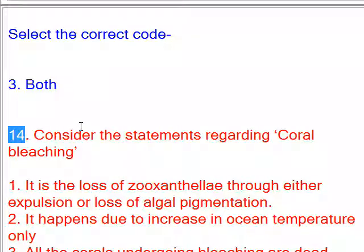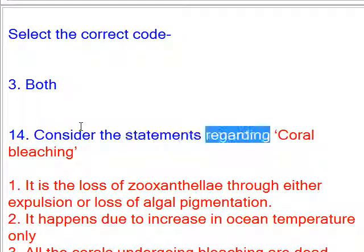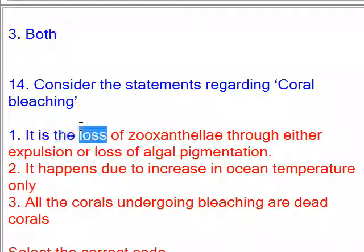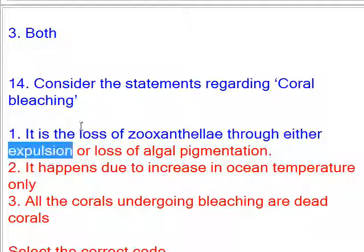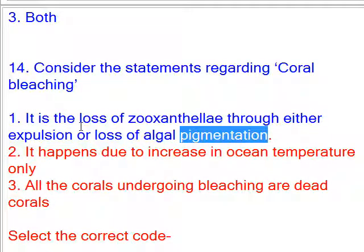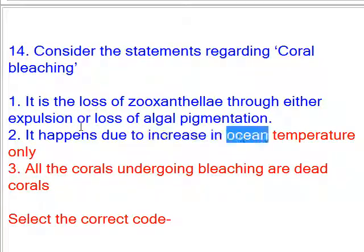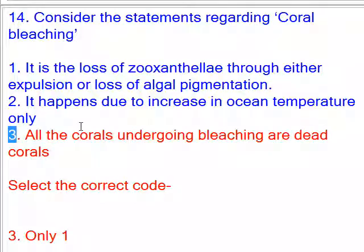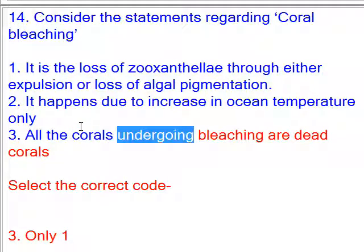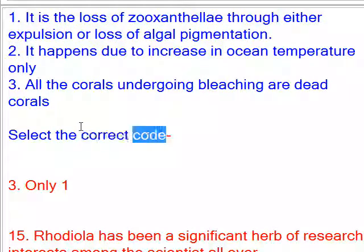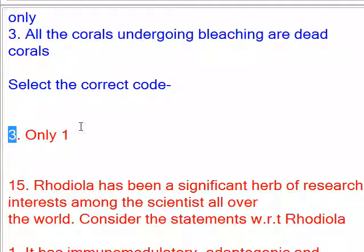Consider the statements regarding coral bleaching: 1. It is the loss of zooxanthellae through either expulsion or loss of algal pigmentation. 2. It happens due to increase in ocean temperature. 3. All the corals undergoing bleaching are dead corals. Select the correct code. Answer: Only 1 and 2.